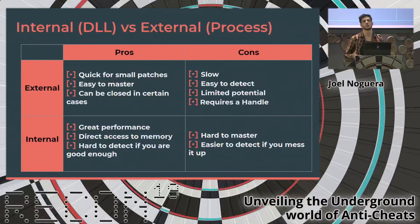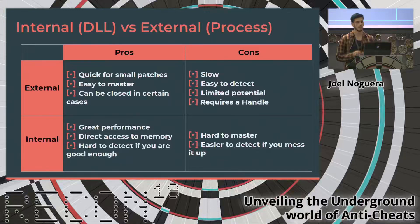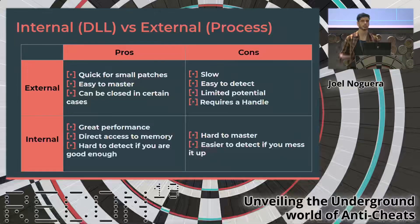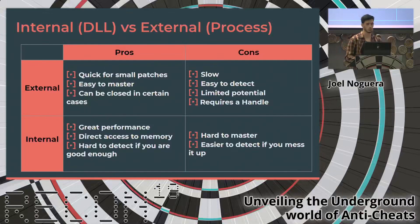An internal cheat is quicker because it runs in the process context. On the other side, an external cheat is another process running simultaneously that constantly reads and writes memory from the game. This makes it slower and easier to detect, because the ways to access the process are well-known in Windows and it's easier to prevent.